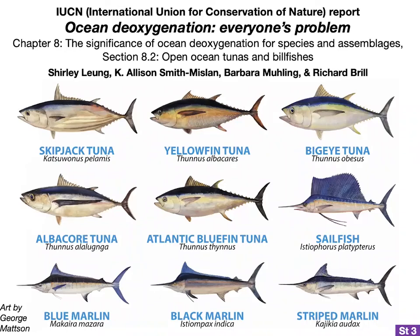Story number three was part of an IUCN, or International Union for the Conservation of Nature, report on ocean deoxygenation — meaning the loss of oxygen from the ocean with climate change. This IUCN report was meant to inform policymakers, scientists, and the general public, so it's relatively readable. The report dealt with deoxygenation's effects on many habitats and species, but our chapter was specifically tasked to look at the effects on tunas and billfishes.